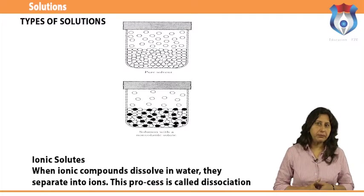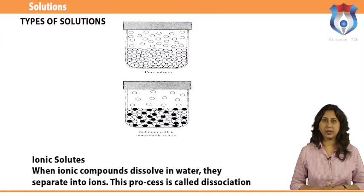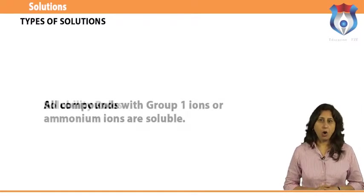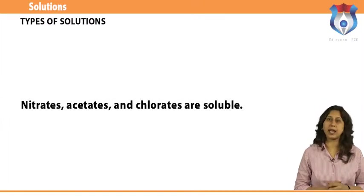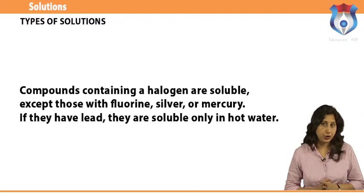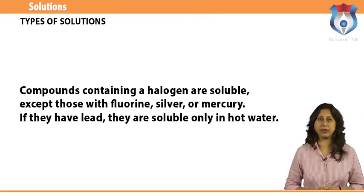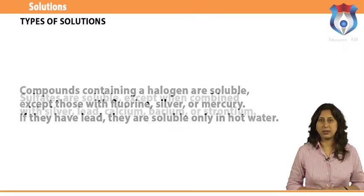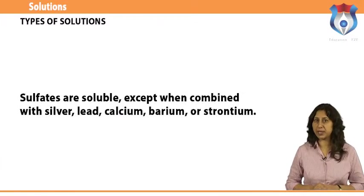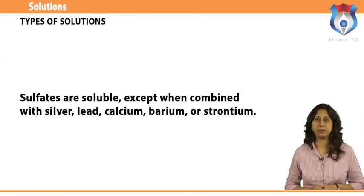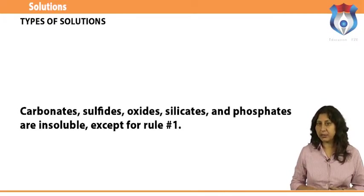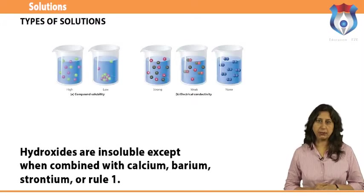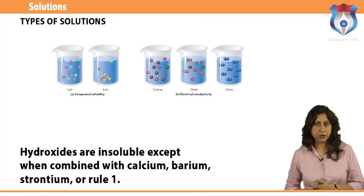When ionic compounds dissolve in water, they separate into ions — this process is called dissociation. Solubility rules summary: all compounds with Group 1 ions or ammonium ions are soluble; nitrates, acetates, and chlorates are soluble; compounds containing a halogen are soluble except those with fluorine, silver, or mercury (those with lead are soluble only in hot water); sulfates are soluble except when combined with silver, lead, calcium, barium, or strontium; carbonates, sulfides, oxides, silicates, and phosphates are insoluble except for rule 1; hydroxides are insoluble except when combined with calcium, barium, strontium, or rule 1.